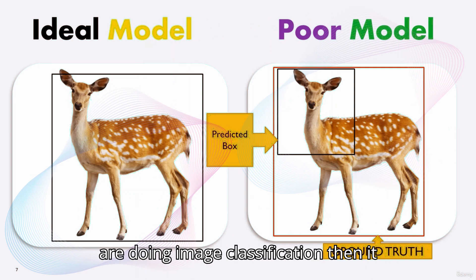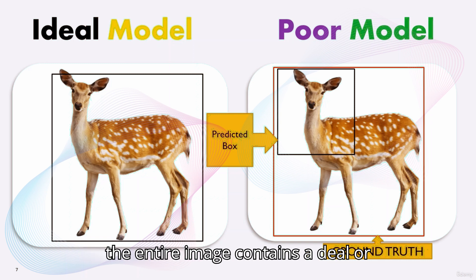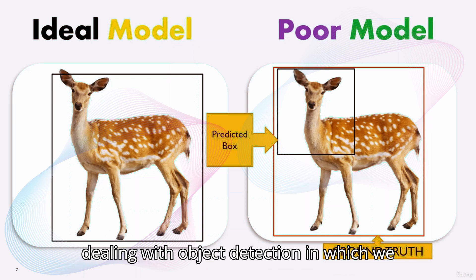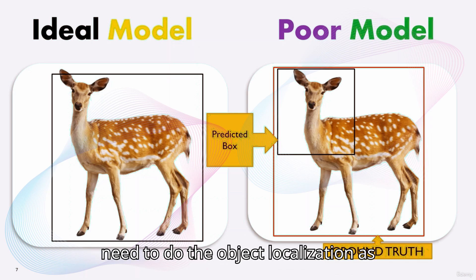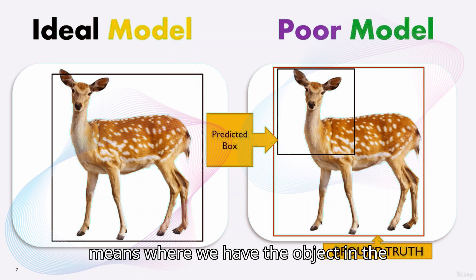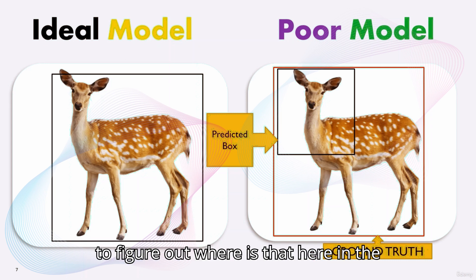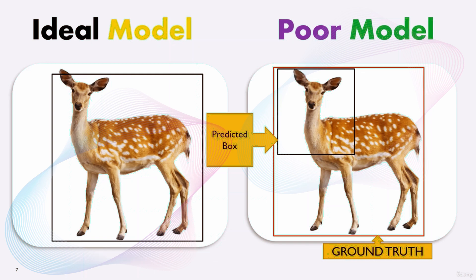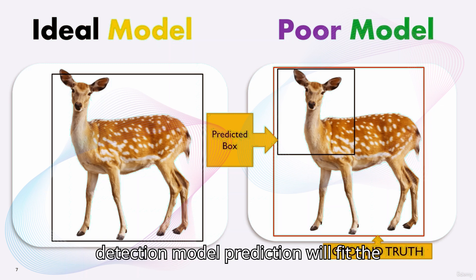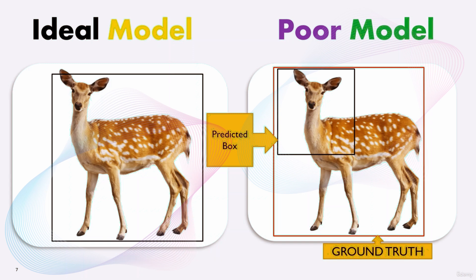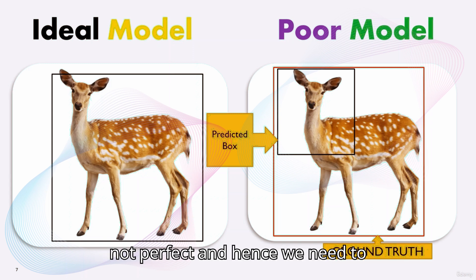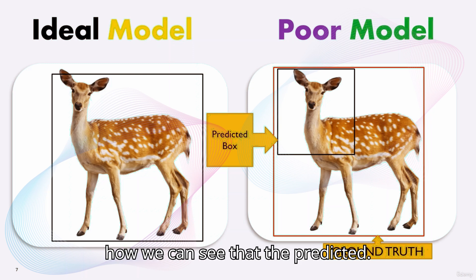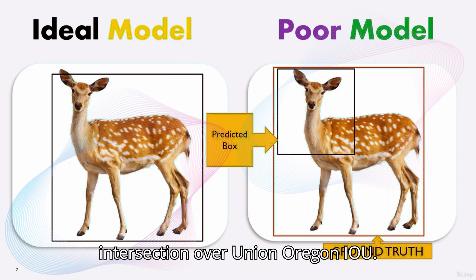When doing image classification, it is simple to determine whether the entire image contains a deer or not. But as we are dealing with object detection, we also need to do object localization — meaning we need to figure out where the object is in the image. That's where intersection over union, or IOU, comes into play. The ideal detection model prediction will fit the deer perfectly to the actual object, but AI predictions are not perfect. We need to define how close the predicted box is to the ground truth, and how the prediction overlaps with the actual object boundaries. For this, we use intersection over union, or IOU.